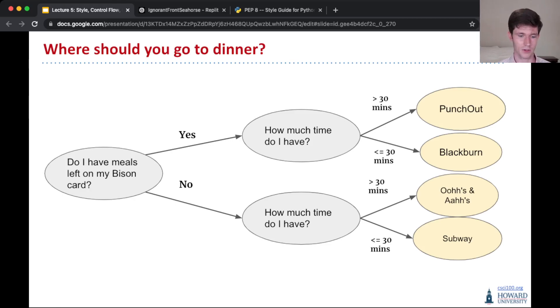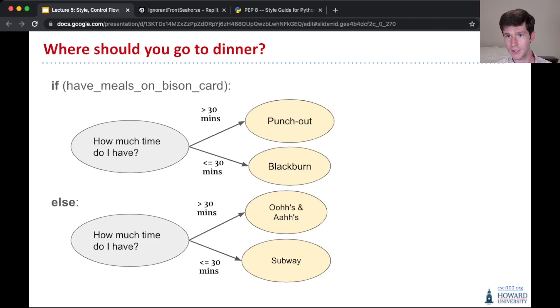So how do we implement this in code? Well, each of these branches, each time each level of branching is an if-else conditional pair. So if you have meals on your bison card, then you have a smaller tree underneath. Otherwise, you have a different smaller tree.